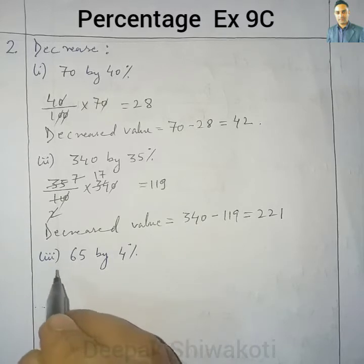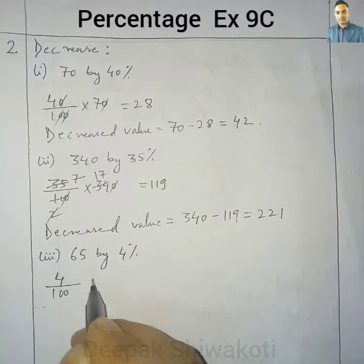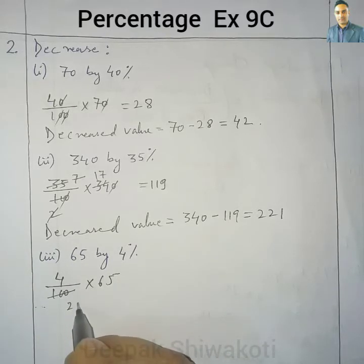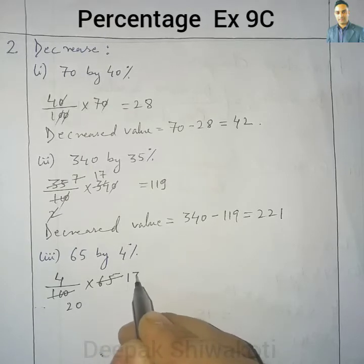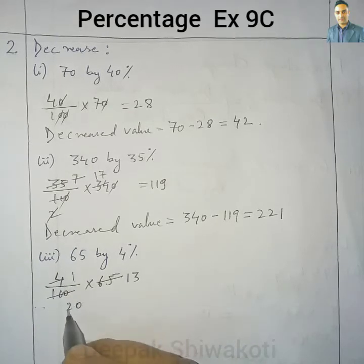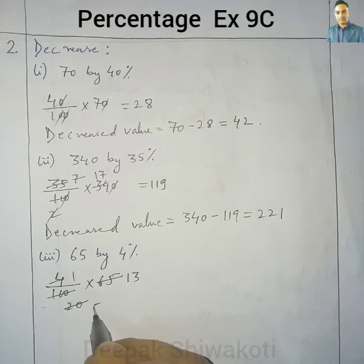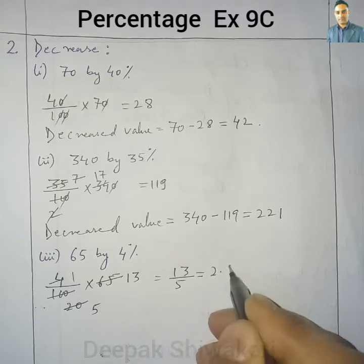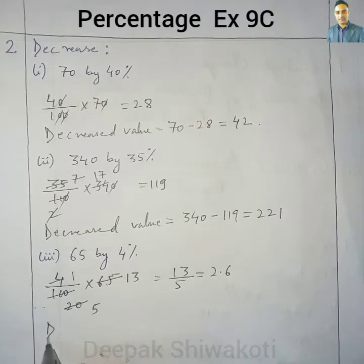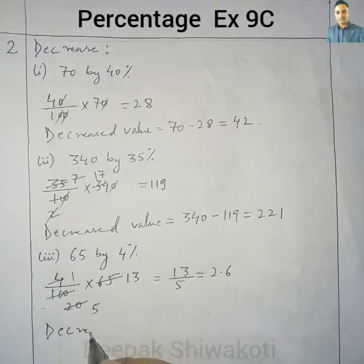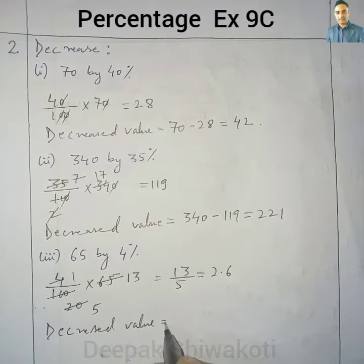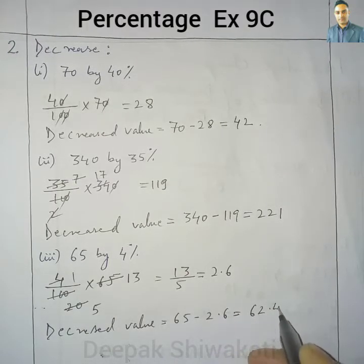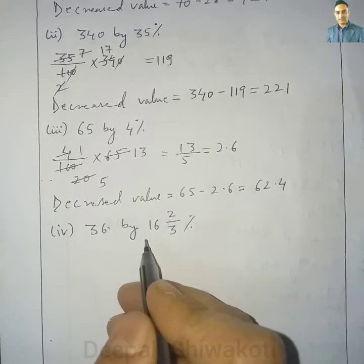Question 2.3: Decrease 65 by 4%. We calculate 4% of 65. 4 × 65 / 100 = 260/100, which equals 2.6. The decreased value is equal to 65 minus 2.6, which equals 62.4.